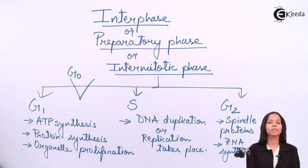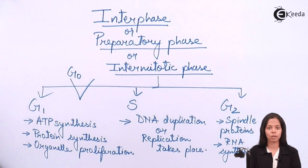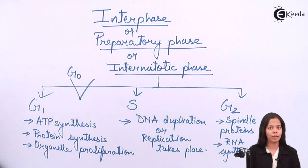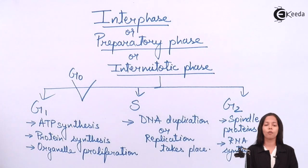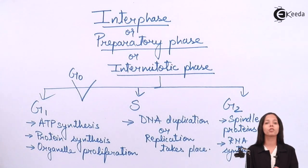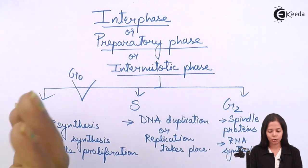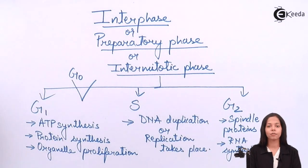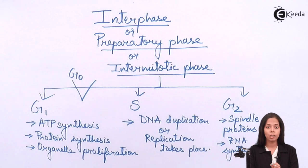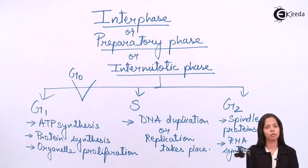If the cell doesn't enter G0 phase, the cell will grow or divide very rapidly, which will result in the formation of a tumor. And tumor can finally result in cancer. So it is very necessary for the cell to enter G0 phase at some time interval.